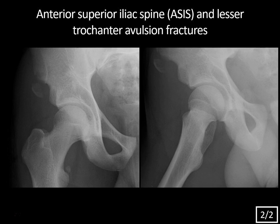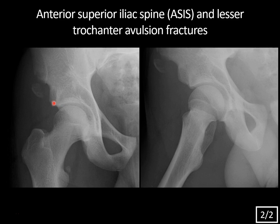This patient had anterior superior iliac spine and lesser trochanter avulsion fractures. Pelvic avulsion fractures are common in young athletes from forceful muscular contraction. The muscles attaching to the anterior superior iliac spine are the sartorius and tensor fascia latae. Other avulsion sites include: the iliac crest (abdominal muscles), anterior inferior iliac spine (rectus femoris), ischial tuberosity (hamstrings — the most common site), pubic symphysis and inferior ramus (adductors), greater trochanter (gluteus minimus and medius), and lesser trochanter (iliopsoas). You may see avulsion fractures of varying age in athletic young patients, so include these in your search pattern.